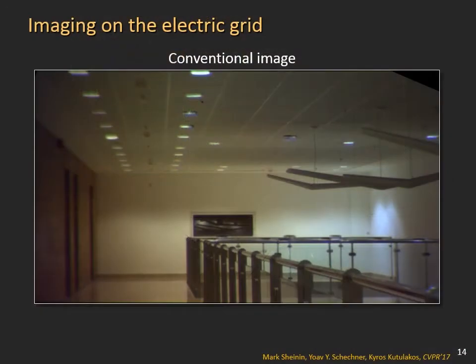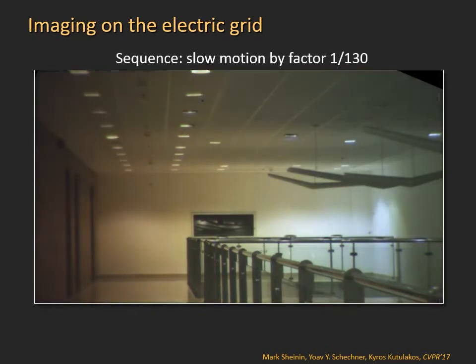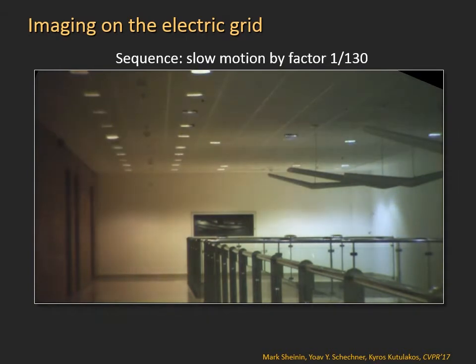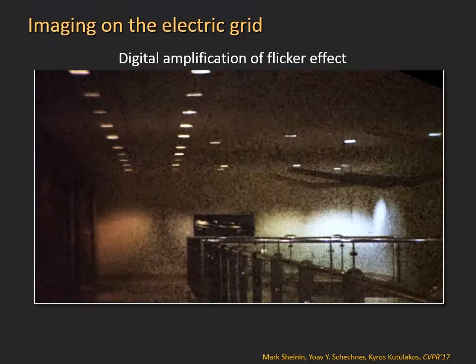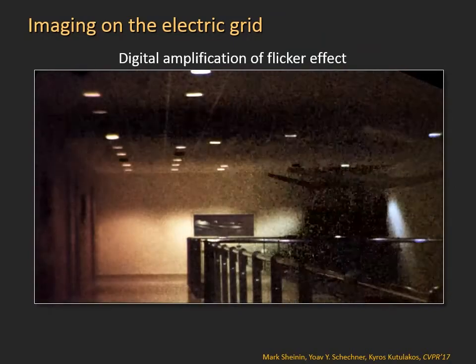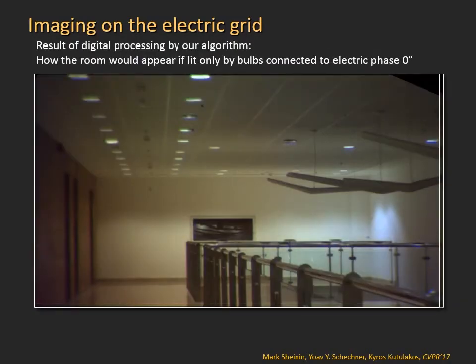Now let's look at this hallway. Here is a conventional image, and here is an image sequence captured using our special camera system. The sequence spans the flicker cycle. This sequence is shown slowed down by a factor of 130, since it is too fast to be perceived by the naked eye. Here the effect is digitally amplified for better visualisation. By processing this data, we reveal hidden information about the scene and show the scene in a new and different light.